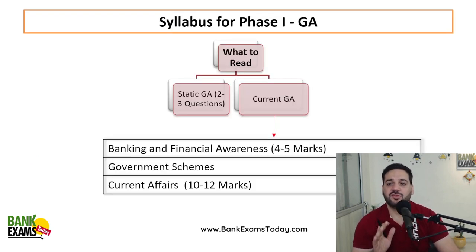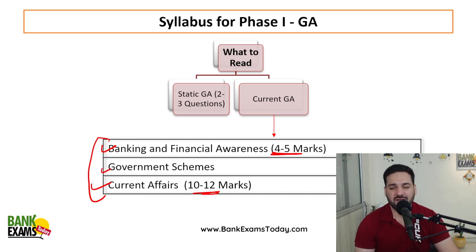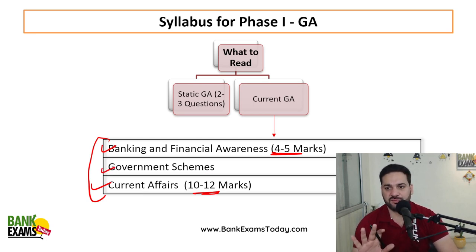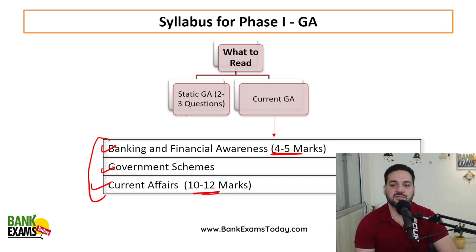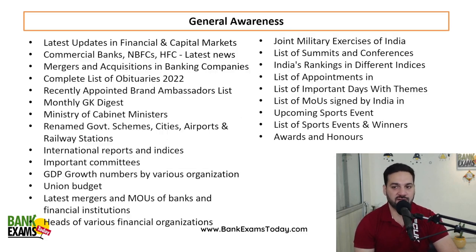The syllabus for general awareness is a little complicated but you can divide it into three major parts: banking and financial awareness — around four to five marks — current affairs — around 10 to 12 marks — and government schemes — around three to four marks. There will also be two to three questions from the static portion.